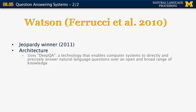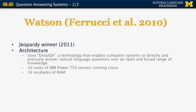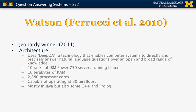Deep Q&A is a technology that enables computers to precisely answer natural language questions using different types of knowledge sources — both structured data, but also inference engines and knowledge representations. It has a very powerful hardware implementation: 10 racks of IBM servers running Linux, 16 terabytes of RAM, almost 3,000 cores, operating at a neck-breaking speed of 80 teraflops. Most of it is written in Java, with a little bit in C++ and Prolog. All components are integrated using IBM's Unstructured Information Management Architecture (UIMA) system.